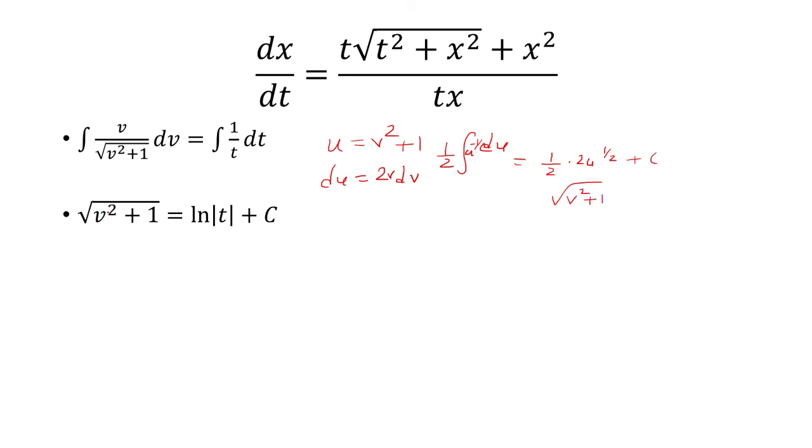So that's what's happening here on the left. And then the antiderivative of 1 over t is ln of absolute value of t plus c.